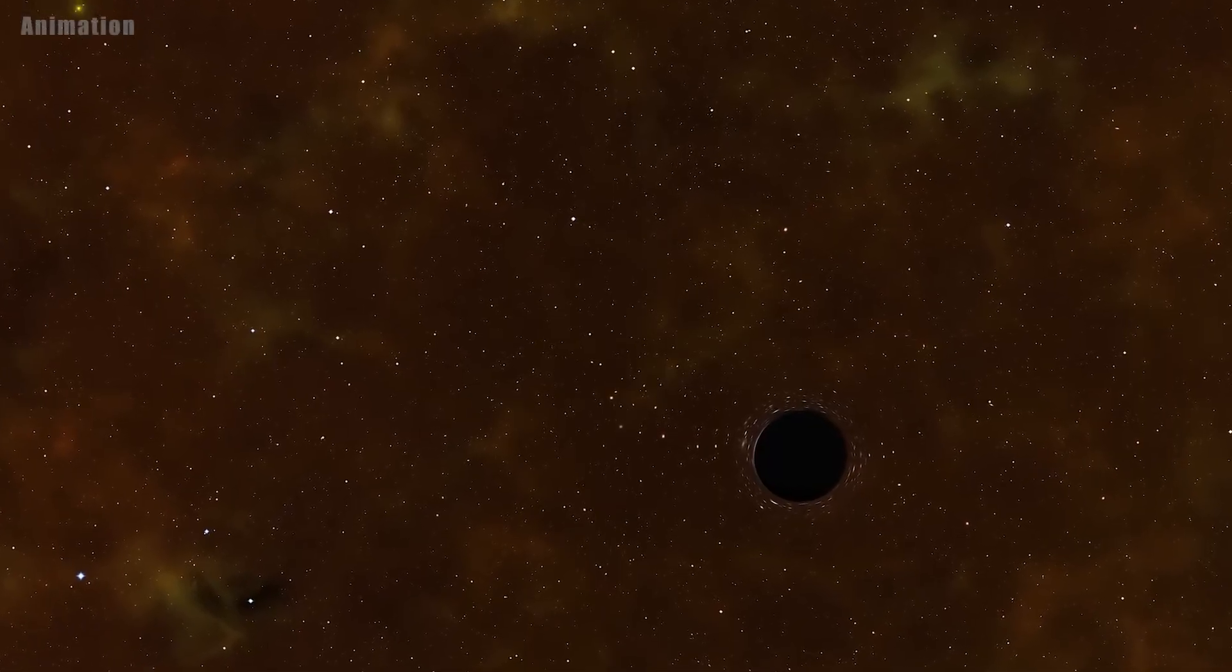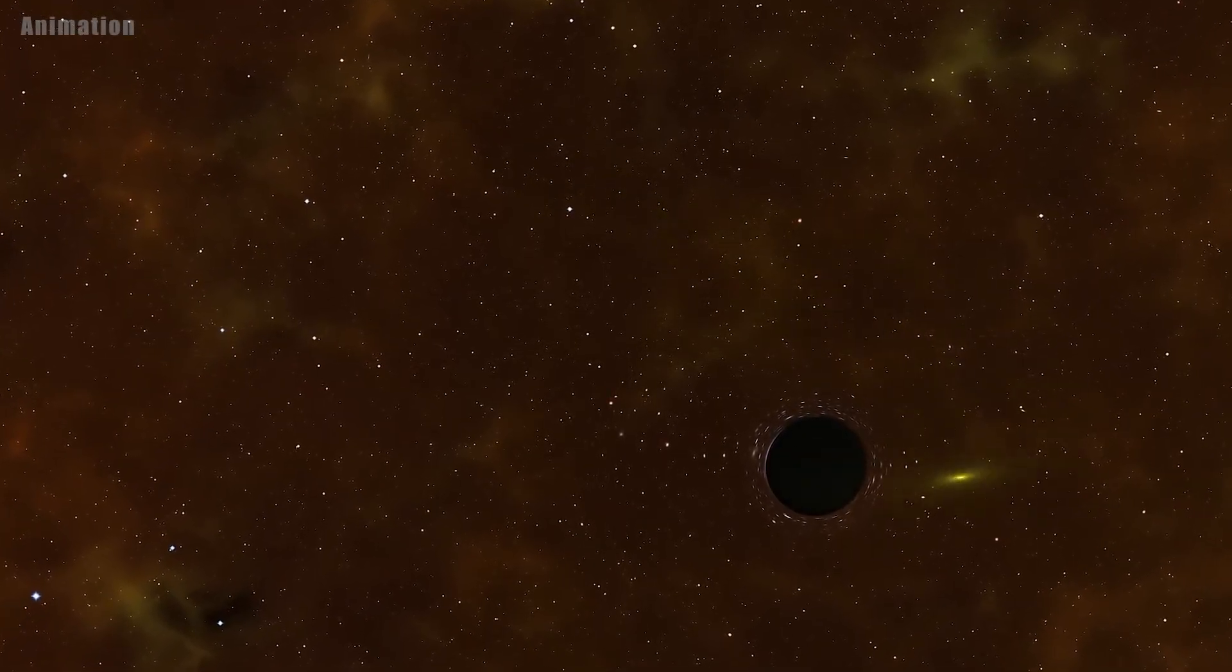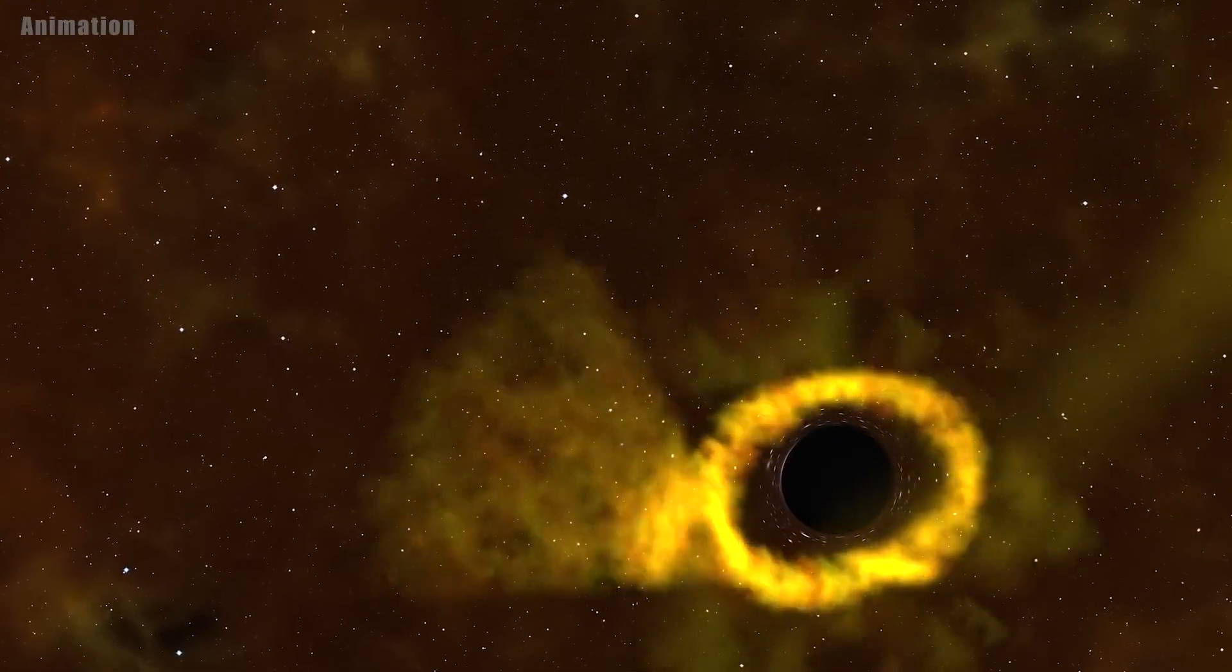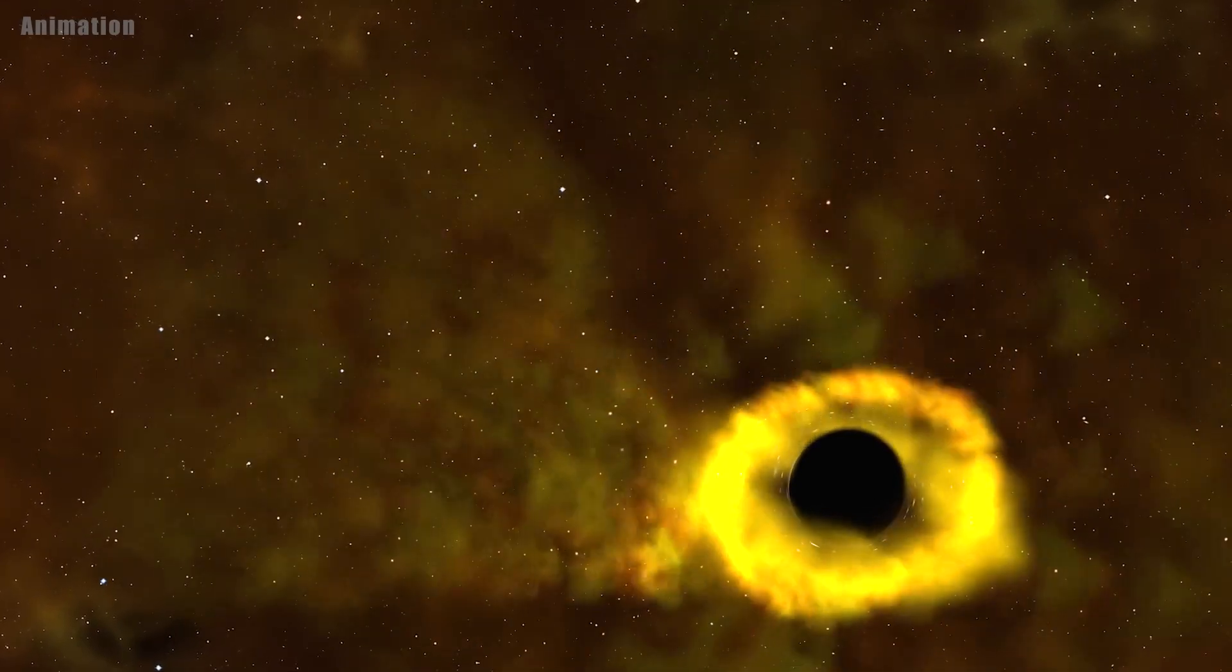Hubble data found a very bright, hot, donut-shaped area of gas the size of the solar system swirling around a black hole. The swirling gas was once a star.